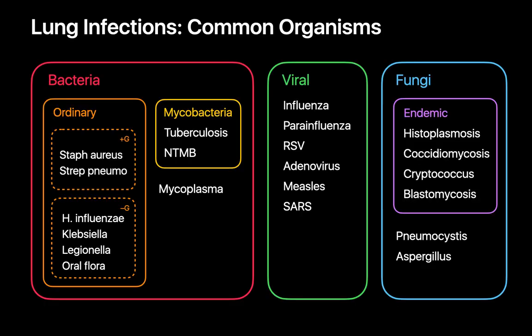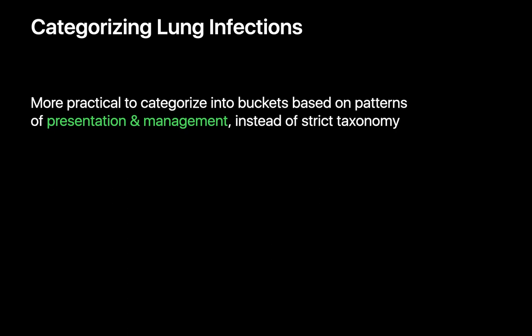When it comes to pathogens responsible for lung infections, the usual suspects belong to the bacterial, viral, and fungal kingdoms. Bacterial organisms can be divided between ordinary bacteria, mycobacteria, and mycoplasma. Staph aureus and pneumococcus are the most common gram-positive ordinary bacteria, while H. flu, Klebsiella, Legionella, and oral flora are the most common gram-negative ordinary bacteria. Fungi can be divided between endemic organisms like histoplasmosis and cryptococcus versus pneumocystis or aspergillus. Rather than a purely taxonomical approach, it's more practical to categorize lung infections based on how they present and are managed.